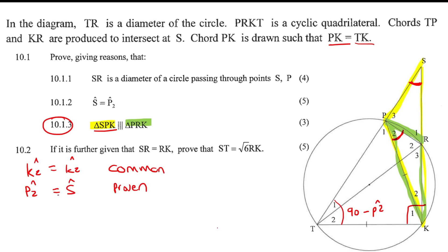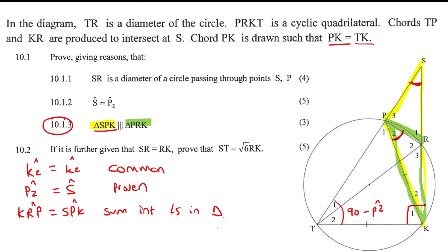So the last angle should be the same in each triangle because of the sum of angles in a triangle. In the green triangle that unused angle is KRP, and in the yellow triangle it is SPK — those must be equal. Therefore triangle SPK is similar to triangle PRK because of angle-angle-angle.